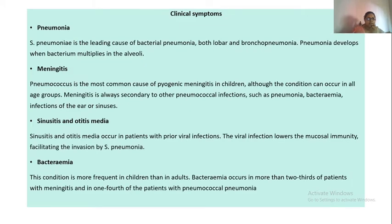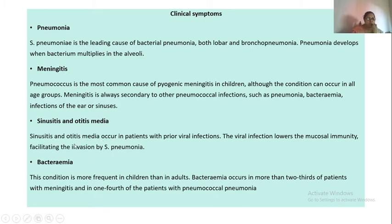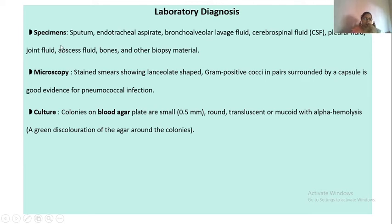The clinical symptoms of Streptococcus pneumoniae include: pneumonia — it is one of the major causes of bacterial pneumonia and bronchopneumonia; meningitis — mainly in children; sinusitis; otitis media — it can infect the ears leading to otitis media; and bacteremia — the presence of this organism in the blood. People with meningitis can also develop bacteremia.